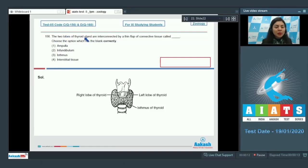Question 156. The two lobes of thyroid gland are interconnected by a thin flap of connective tissue called. Choose the option which fills the blank correctly. Ampulla, infundibulum, isthmus, interstitial tissue.